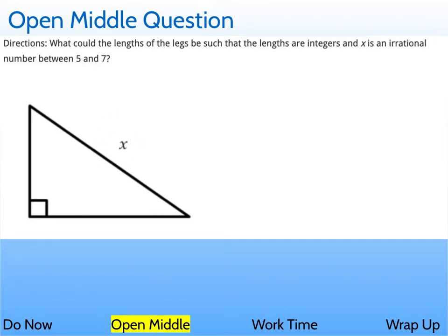So there's a few ways to do this. One thing that's important to note here, between 5 and 7 would mean that x squared needs to come between 25 and 49.